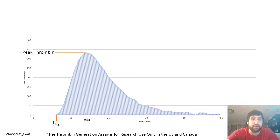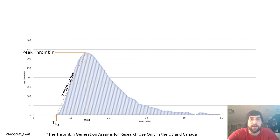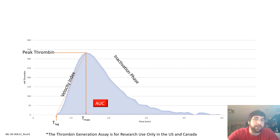There is the concentration of thrombin at the peak time, and this is potentially the single most important derivable factor from the thrombin generation assay. The velocity index is essentially the slope between the lag time and the time to maximum generation. The inactivation phase can be monitored coming down from peak thrombin generation, qualitatively describing the various negative regulators of thrombin activation. Finally, you have the AUC — area under the curve — or endogenous thrombin potential, abbreviated ETP, describing the total amount of thrombin produced by the subject in the given time frame studied — that's 60 minutes.